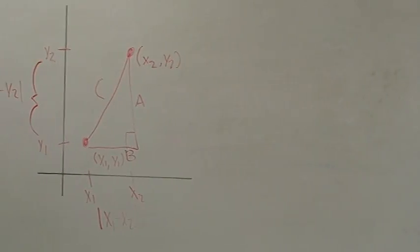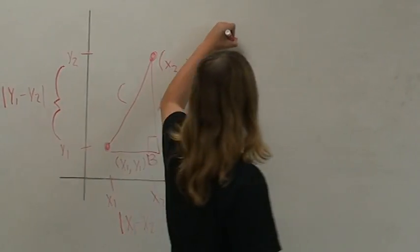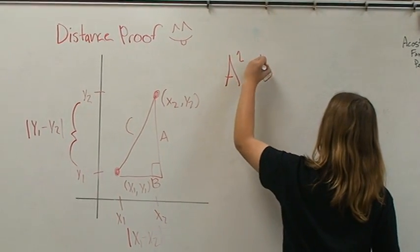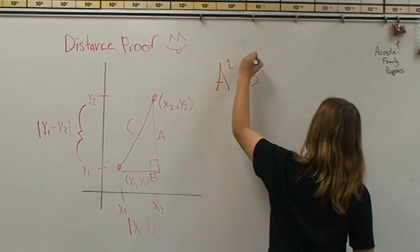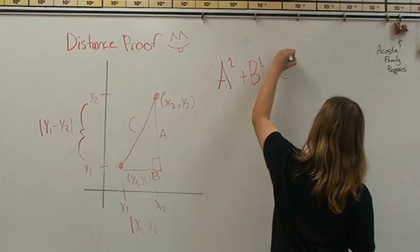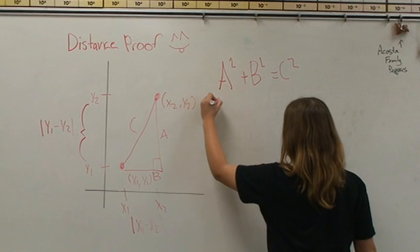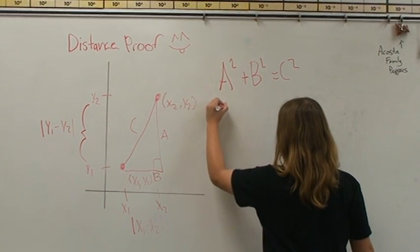A squared plus B squared equals C squared. We plug in our corresponding values for those legs of the right triangle.